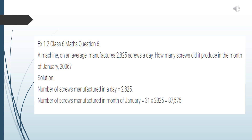Question six: a machine on average manufactures 2825 screws a day. How many screws did it produce in the month of January 2006? Before explaining, I take an example: if a toy costs rupees 50, the cost of 5 toys is found by multiplication. Similarly, we know January has 31 days, so total screws = 31 × 2825 = 87,575.